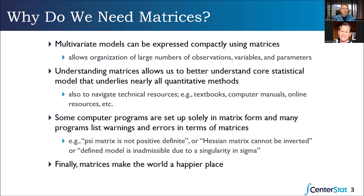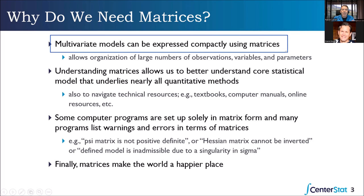Why do we need matrices? Multivariate models involving multiple predictors and multiple outcomes can be expressed very efficiently and compactly using matrices. Part of the magic of matrices is they expand and contract to fit whatever characteristics your modeling and data have. A very famous matrix expression is X-prime X-inverse X-prime Y — that gives you your regression coefficients in multiple regression. Whether you have 10 subjects and 3 variables, or a million subjects and 300 variables, it's exactly the same expression. Very efficient, very elegant, very compact.